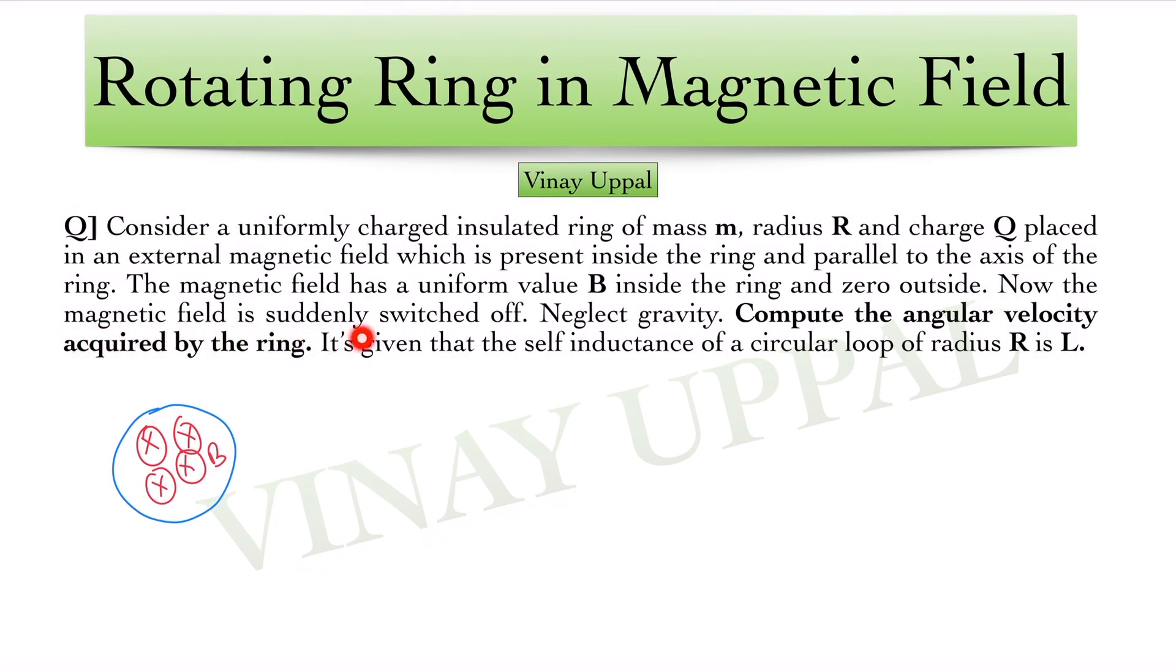Now the magnetic field is suddenly switched off. Neglecting gravity, compute the angular velocity acquired by the ring. This last sentence is the important one, the modification that I made in the usual type of problem. It is given that the self inductance of a circular loop of radius R is L.